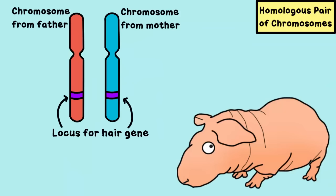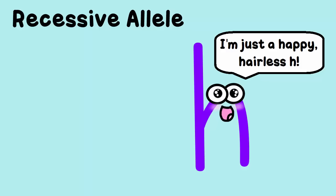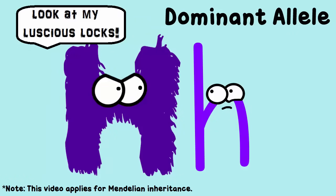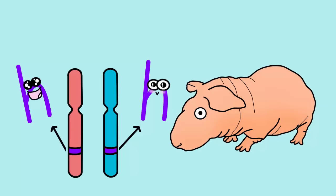A hairless guinea pig has two recessive alleles for the trait of having or not having hair. A recessive allele is usually represented by a lowercase letter. By recessive, it means that the allele will not usually show up — the only way it will show up is if there is no dominant allele present. So a hairless guinea pig does not have a dominant allele for hair, and that's why the recessive trait — not having hair — shows up.